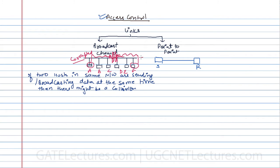So access control means: if this is the channel and there are more than one hosts in the network, we must control which host gets access to send data at one time. If we give access to both A and F simultaneously, there might be a collision. Therefore, access to this link has to be controlled such that if one station is sending data, then others — station B, station F, station E — should not send data at the same time.